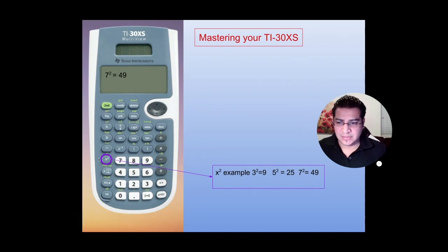Next thing you want to know is the X square here. So if you have a number like 7 square, which would give you 49, here are more examples. You can press that button there.